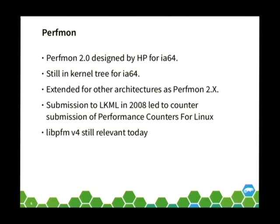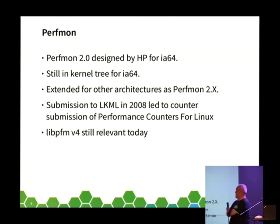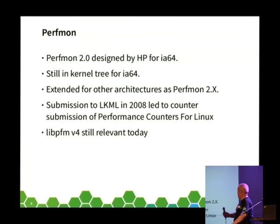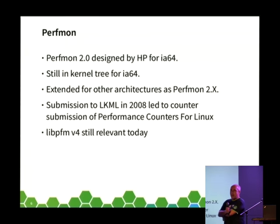Perfmon 2.0 was the first in-tree subsystem that used performance monitoring hardware — designed by HP for Itanium, still in the kernel tree today for Itanium. It was extended for other architectures, specifically x86-64, in 2008. Perfmon pushed nearly all of the logic into libraries: there was a library called libpfm, a tool called pfmon, and the actual kernel side was very small. That got submitted to LKML in 2008, and there's been a lot of controversy over the years about tools that live out of tree.